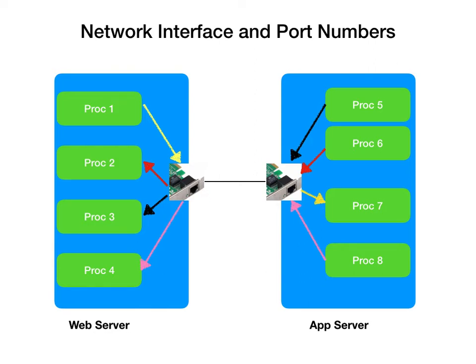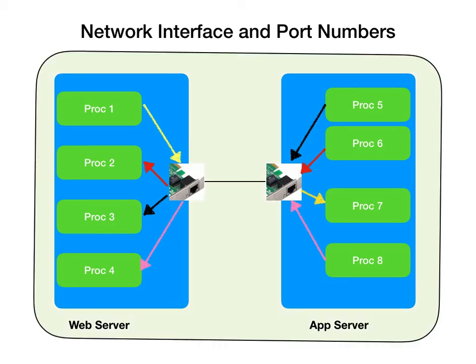Both of these cards have an IP address. But to go from process 1 to process 7, it needs more information than just the IP address — this is where port numbers come in. When process 1 starts communication with the network card, it gives the IP of the other server as well as the port number, and this is how the second network knows where to route that particular request.